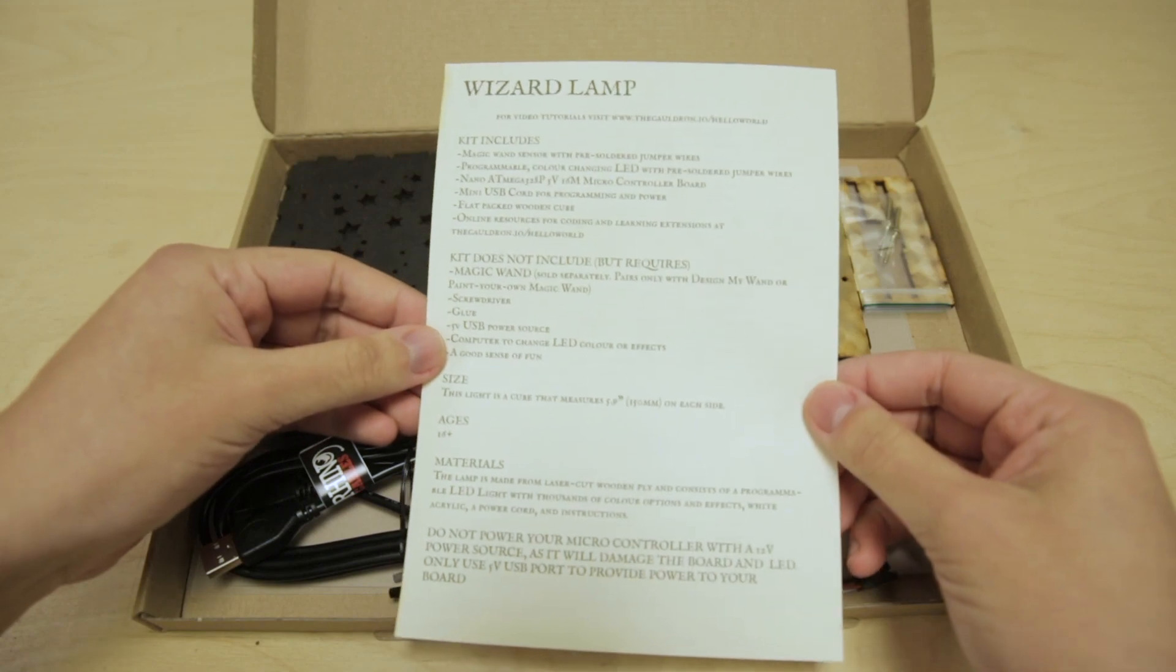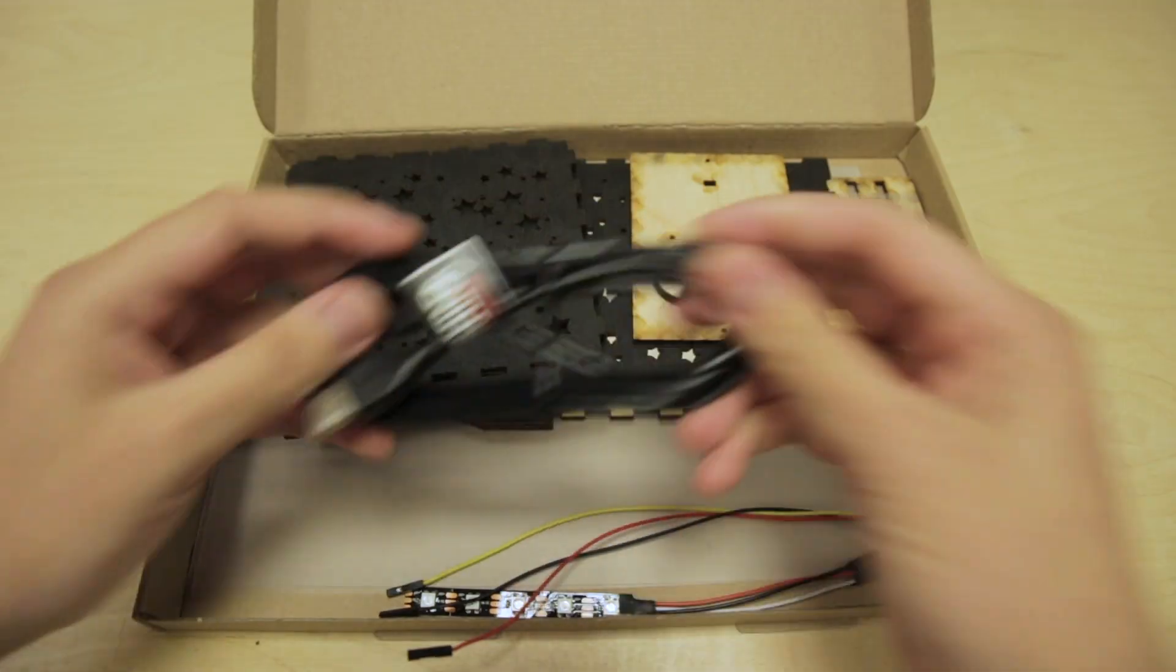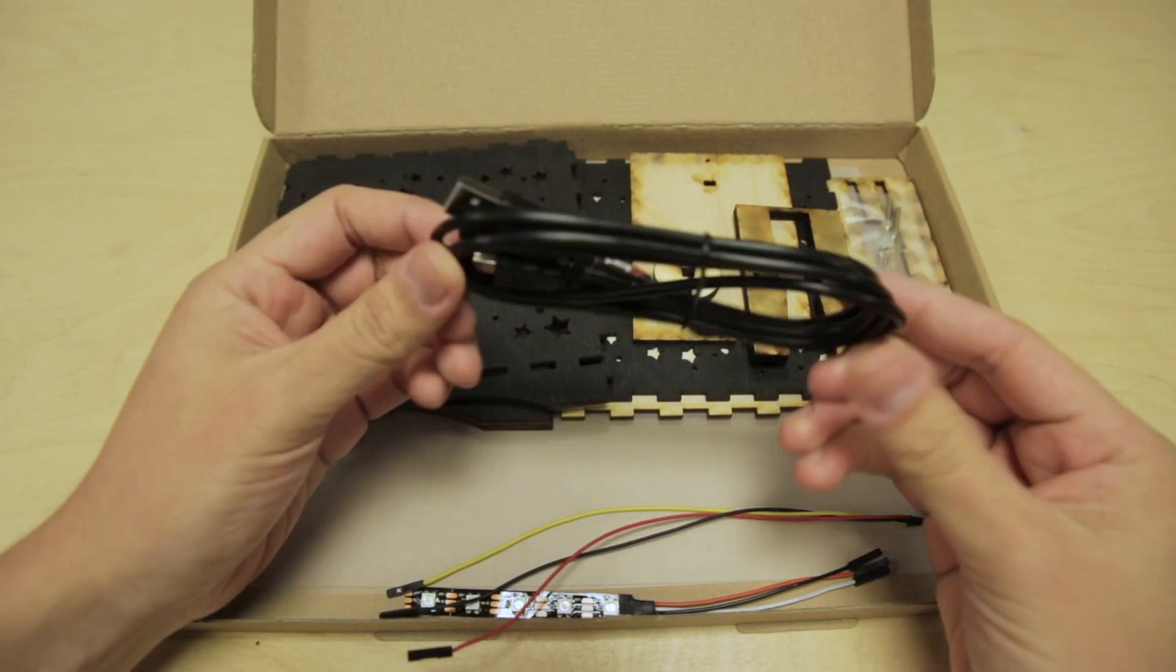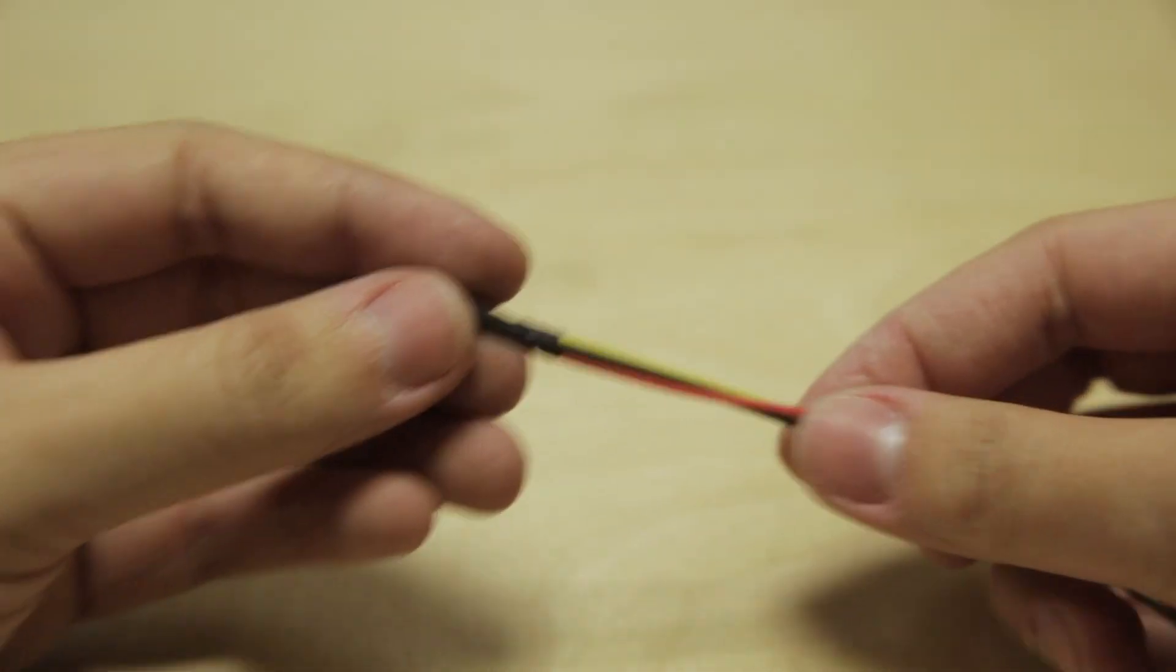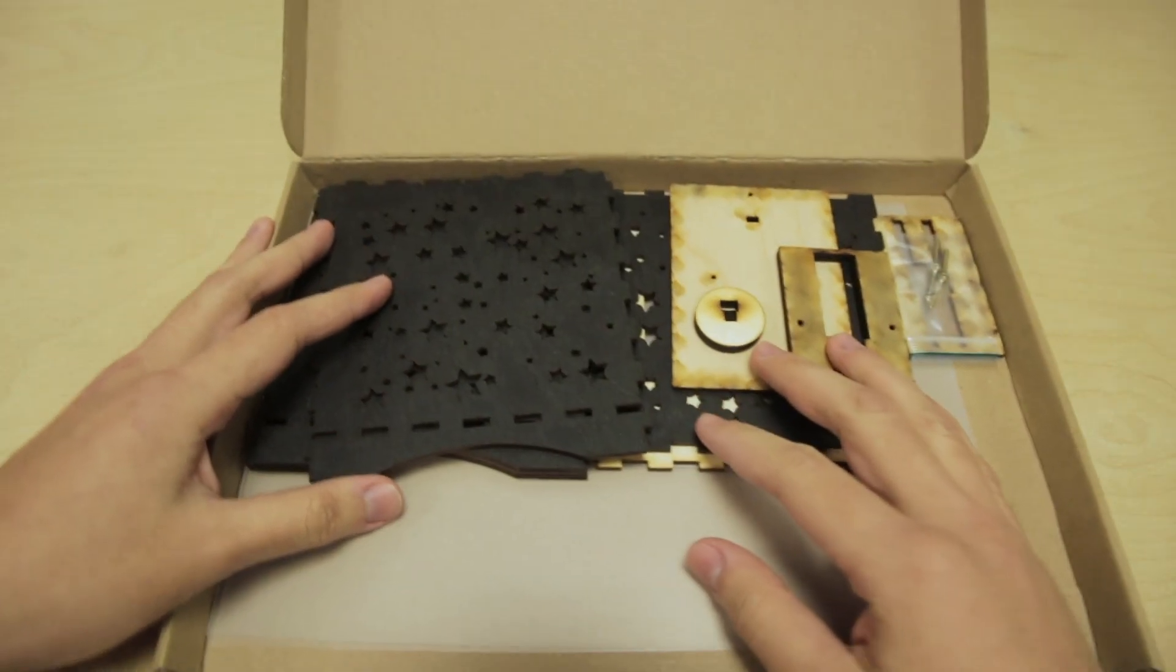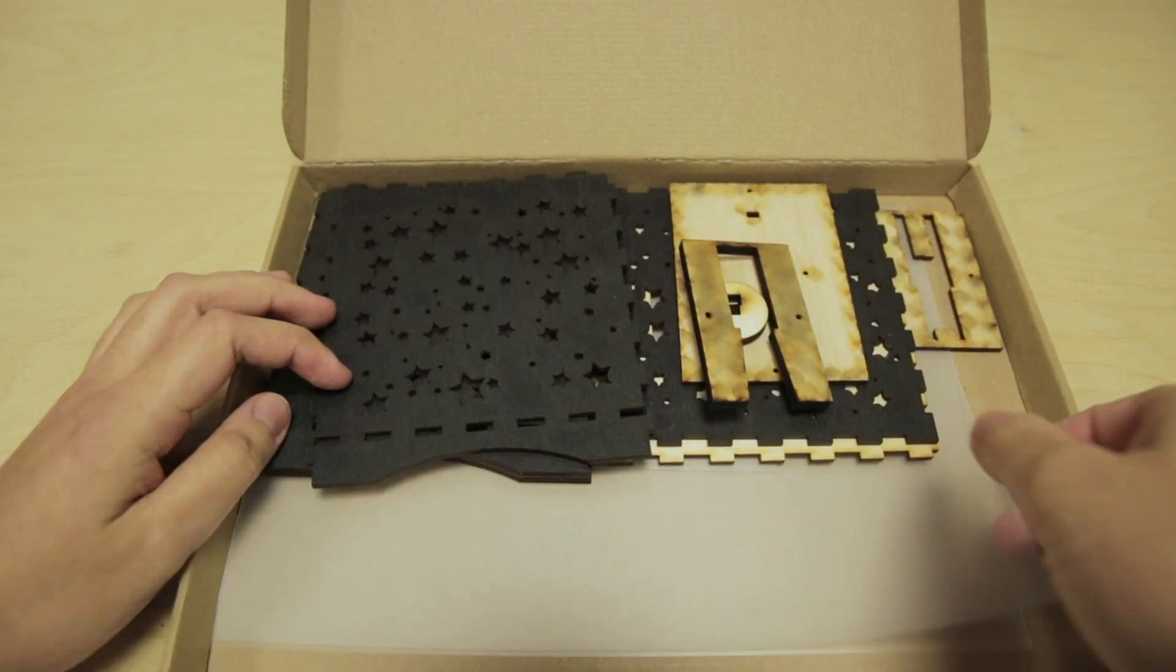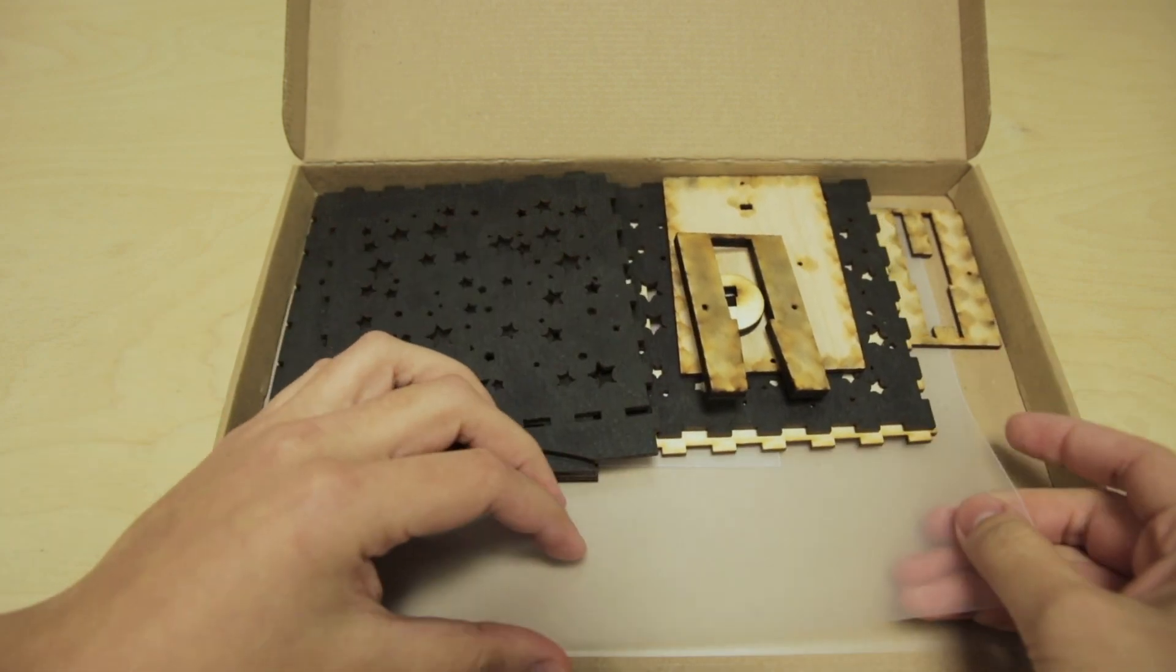First, we have this list of materials and disclaimers. We've got the microcontroller here, this USB cable that will provide power, the magic wand sensor module, and the addressable RGB light strip. We've also got these pieces of laser-cut plywood, some screws, and this diffusion material.